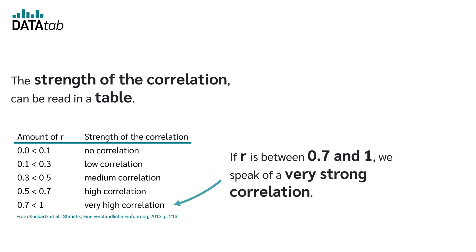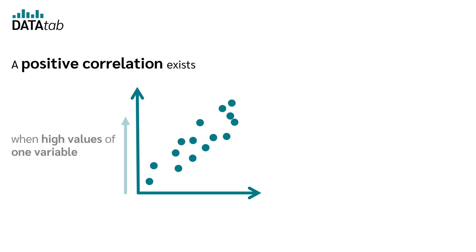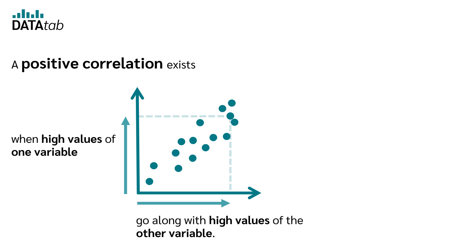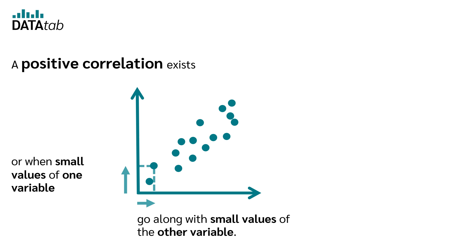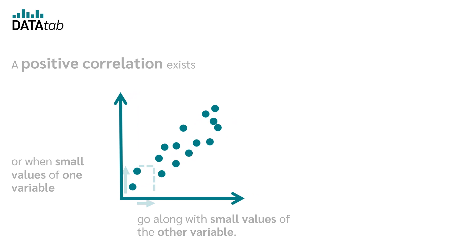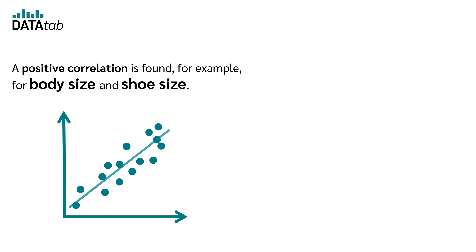If r is between zero point seven and one, we speak of a very strong correlation. A positive correlation exists when high values of one variable go along with high values of the other variable, or when small values of one variable go along with small values of the other variable. A positive correlation is found, for example, for body size and shoe size.